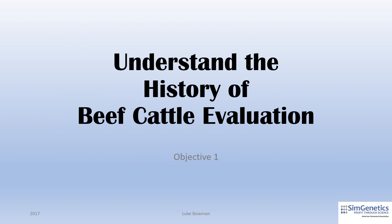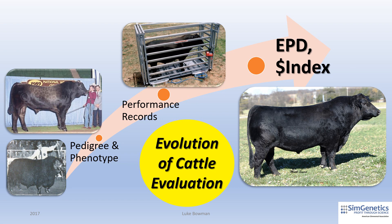Objective number one: understand the history of beef cattle evaluation in the United States. Before we get into the discussion of how EPDs work, we must first reflect on the history of beef cattle evaluation. From the beginning of recorded lineages and the start of the registered breed associations in the USA during the late 1800s, purebred cattle were generally selected and marketed based off their pedigree and phenotype.